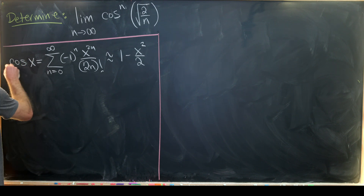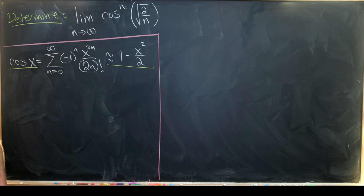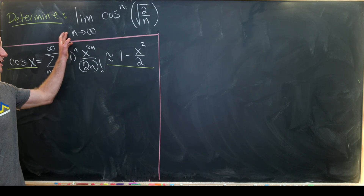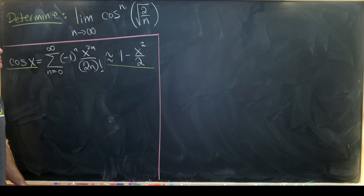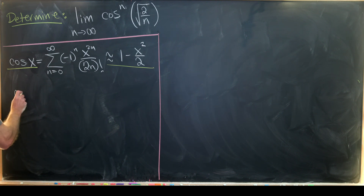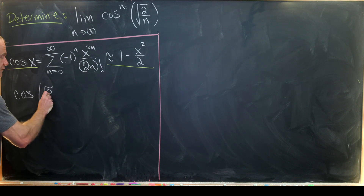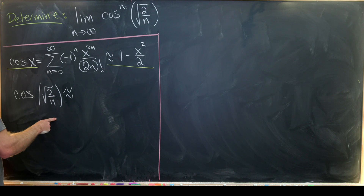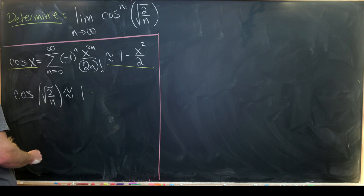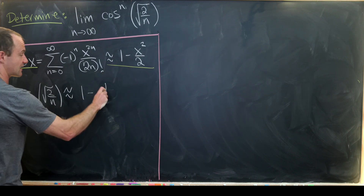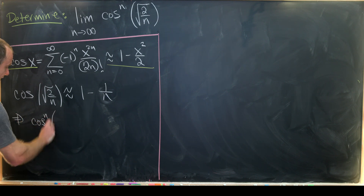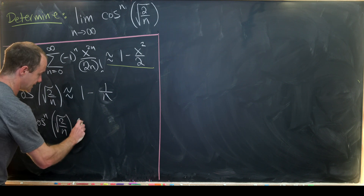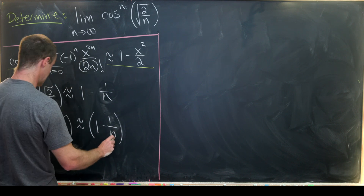Notice I have an approximately-equal sign here rather than equals: cosine is approximately equal to this quadratic polynomial. This is a pretty good approximation when we're close to 0, and we are close to 0 here given that x is playing the role of the square root of 2 over n. So cosine of the square root of 2 over n is approximately equal to 1 minus 1 over n — squaring and dividing by 2 leaves 1 over n — and so cosine to the nth power of the square root of 2 over n is approximately equal to 1 minus 1 over n to the n.